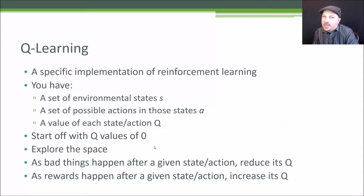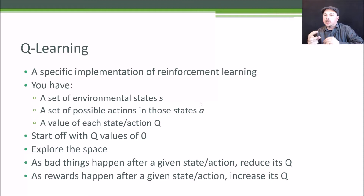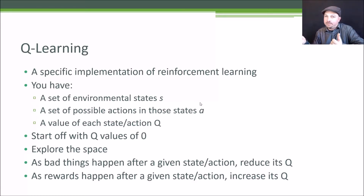A very specific implementation of reinforcement learning is called Q-Learning. This formalizes things a bit more. You start with a set of environmental states — we call that S — which represent the surrounding conditions of the agent: is there a ghost next to me, is there a power pill in front of me? You also have a set of possible actions called A. In Pac-Man, those actions are move up, down, left, or right. Then we have a value for each state-action pair that we call Q. That's why it's called Q-Learning.